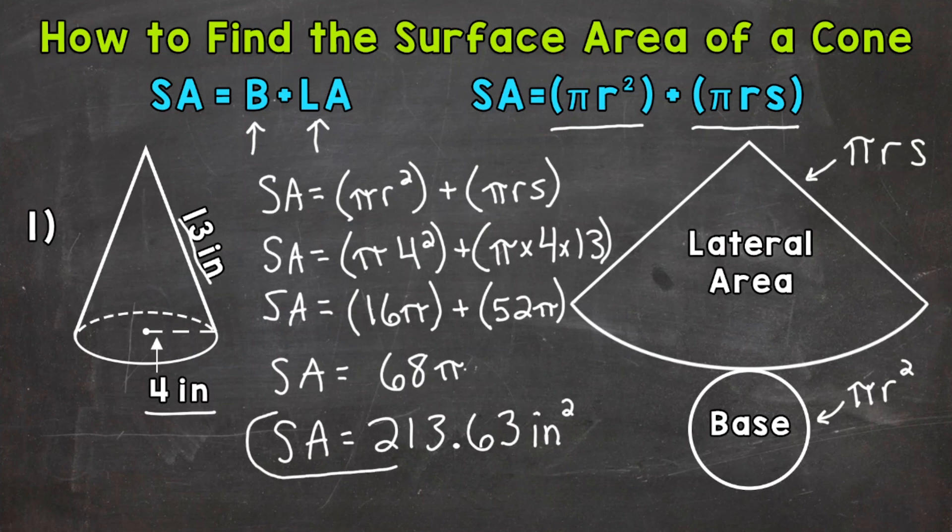And again, I rounded that decimal to the hundredths. So there you have it. There's how you find the surface area of a cone. Find the area of the base and then the lateral area. Add those areas together and you have the surface area.